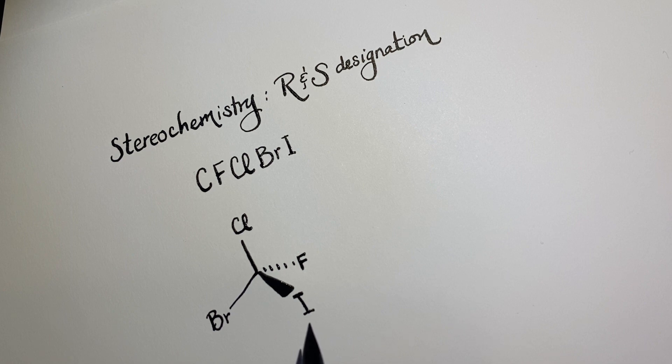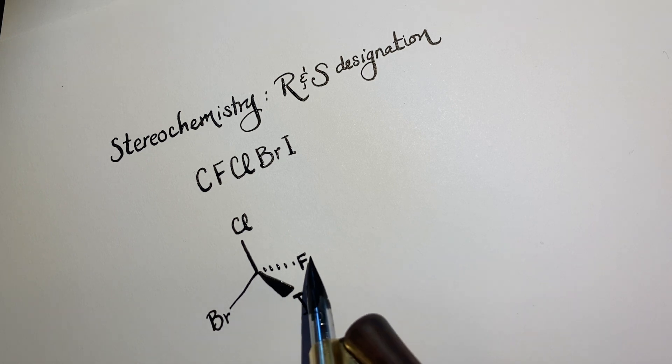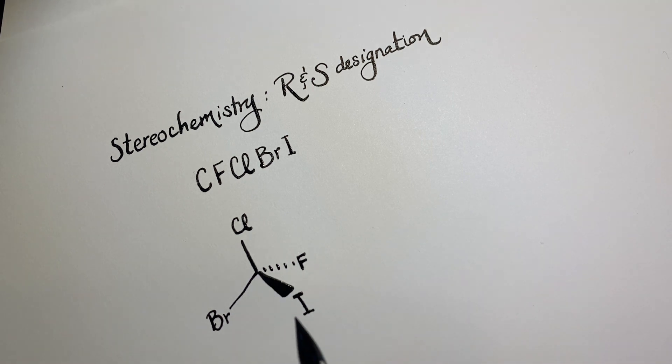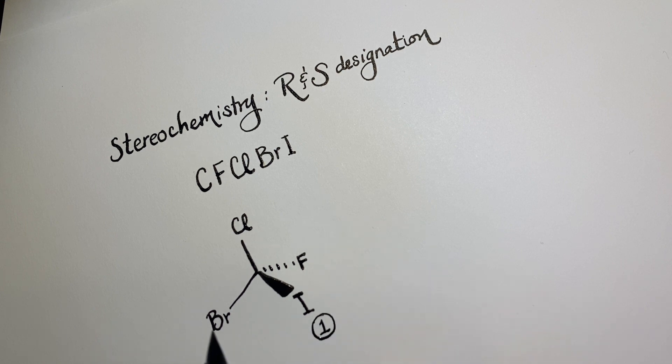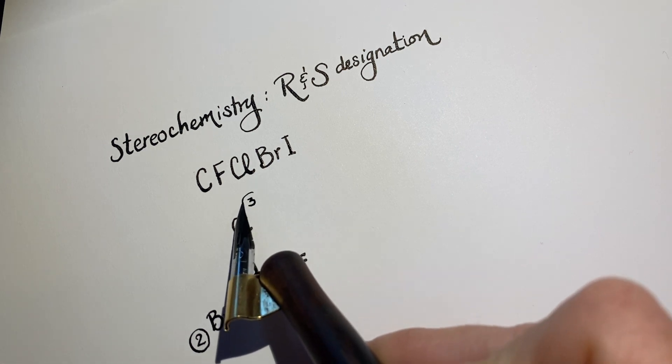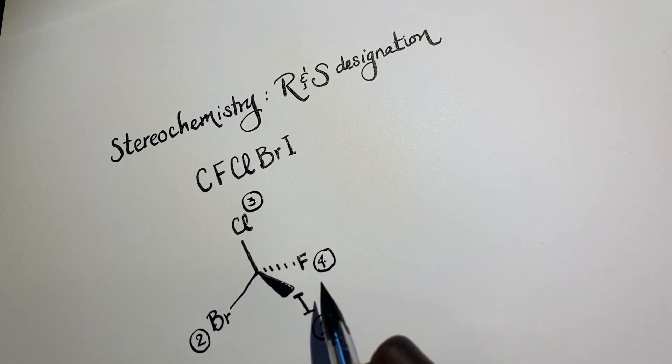So, if we want to learn how to designate this as R or S, then what we first want to do is we have to assign each one of these groups around the chiral center. We need to assign them priority. And the atom with the highest atomic number gets the highest priority. So, in this case, we can designate each one of these based on their atomic number. Iodine is 1, Bromine is 2, Chlorine is 3, and fluorine is 4. So we have now designated the priority.